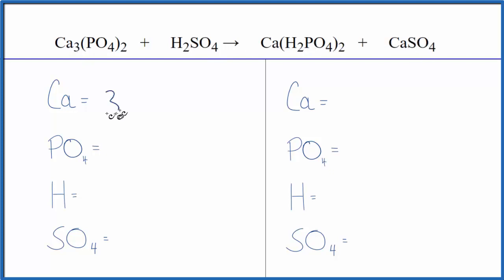We have three calcium atoms. Here's this whole phosphate, PO₄. We have two of those. So I'm going to count that as one thing. That'll make this a lot easier. Two hydrogens, and then I have a sulfate here and here. I'm just going to say I have one sulfate.